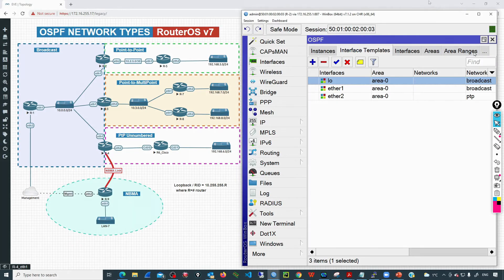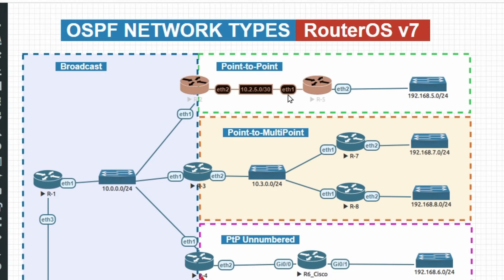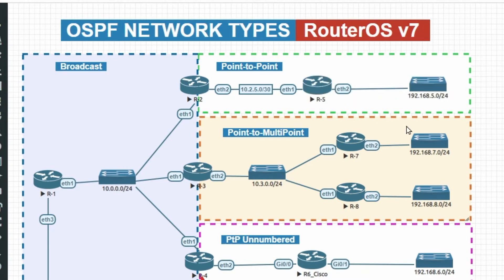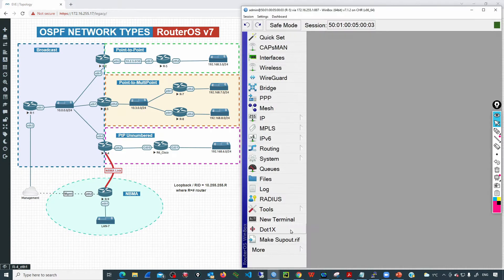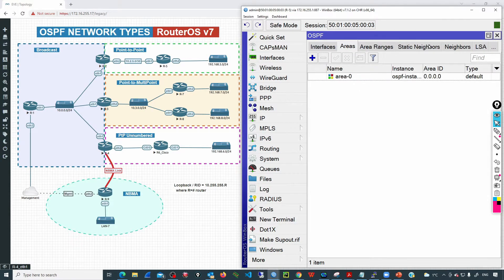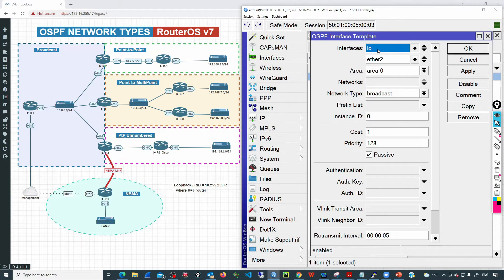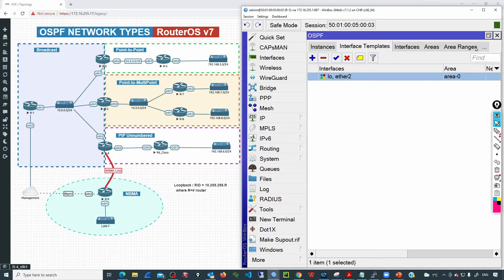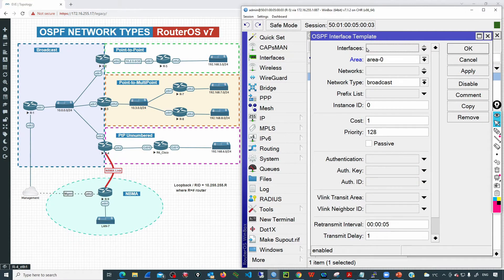We click OK, then go to R5. R5 is connected out of interface ETHER1 to R2. Additionally there is a network we need to advertise: 192.168.5.0, connected to interface ETHER2. So we need an interface template for ETHER2, and also for the loopback interface that will be passive. ETHER1 is going to be point-to-point. I have the IP address configuration on ETHER5, the OSPF instance, the area, and a template including the loopback interface and ETHER2 using the passive property, because we don't expect neighbors out of those interfaces. I just need to add an interface template for ETHER1, connected to R2, with network type point-to-point.